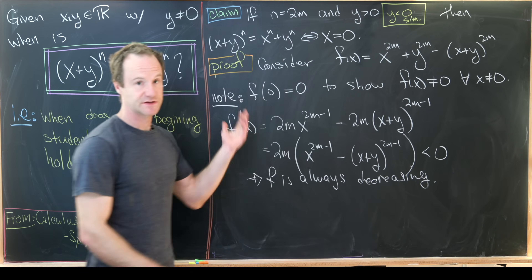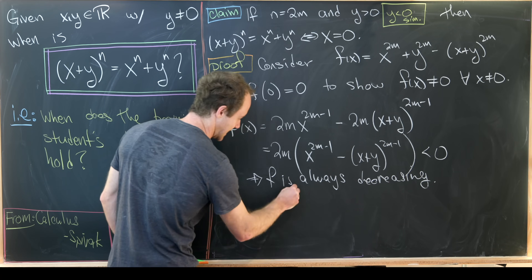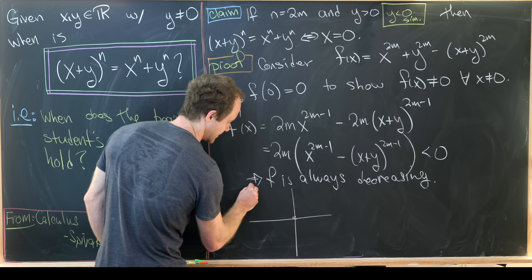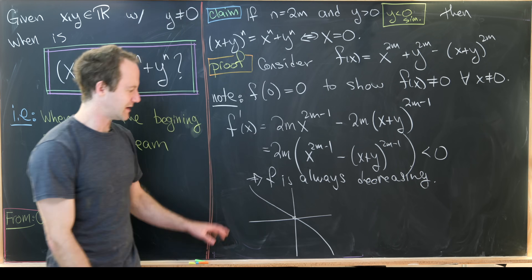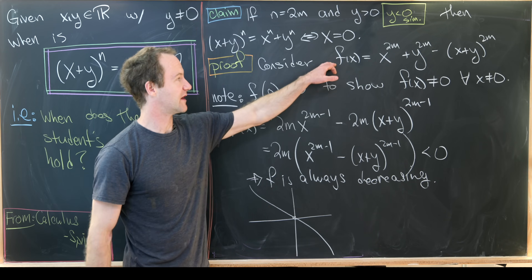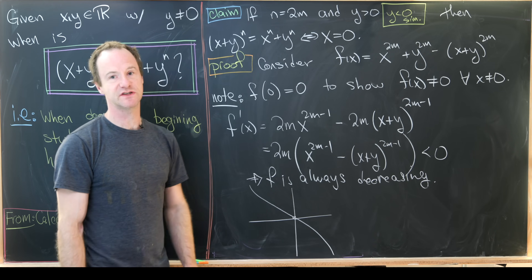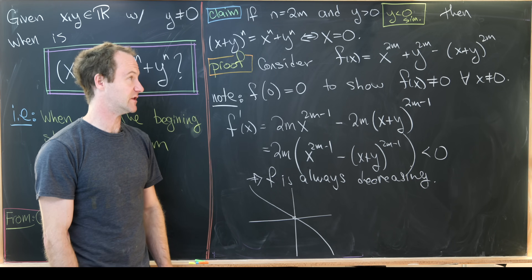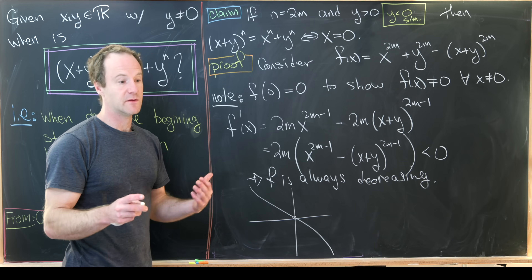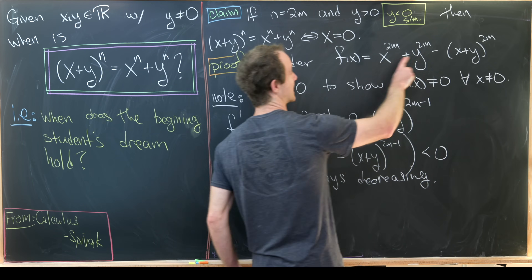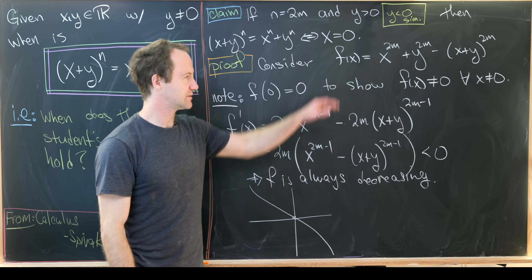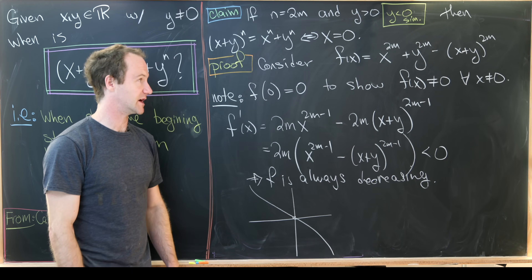Since f is always decreasing and equals zero at x = 0, that's the only place it can be zero. The graph looks like a polynomial of odd degree — and indeed, after the leading x^{2m} term cancels, f is actually a polynomial of degree 2m − 1.